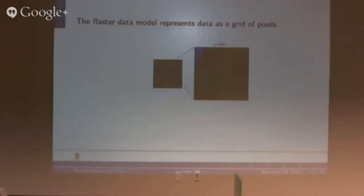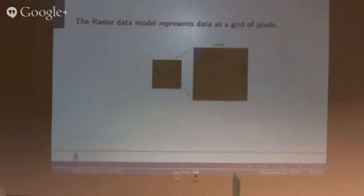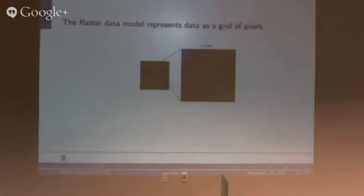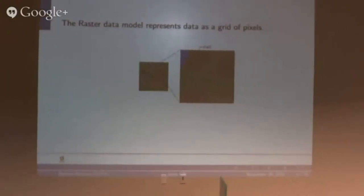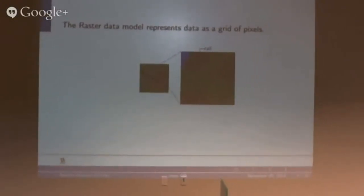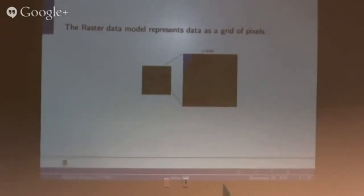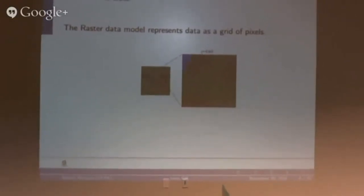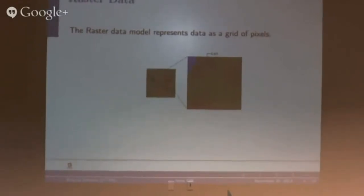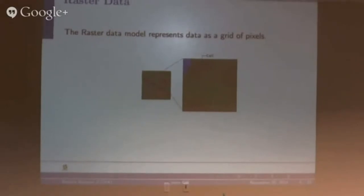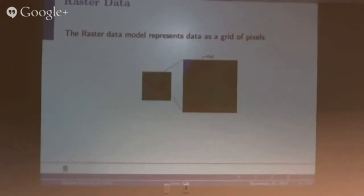Raster data model is more for continuous data such as aerial photographs or satellite images. Because of this, the data is represented as a grid of pixels where each pixel is assigned a value corresponding to the appropriate data.